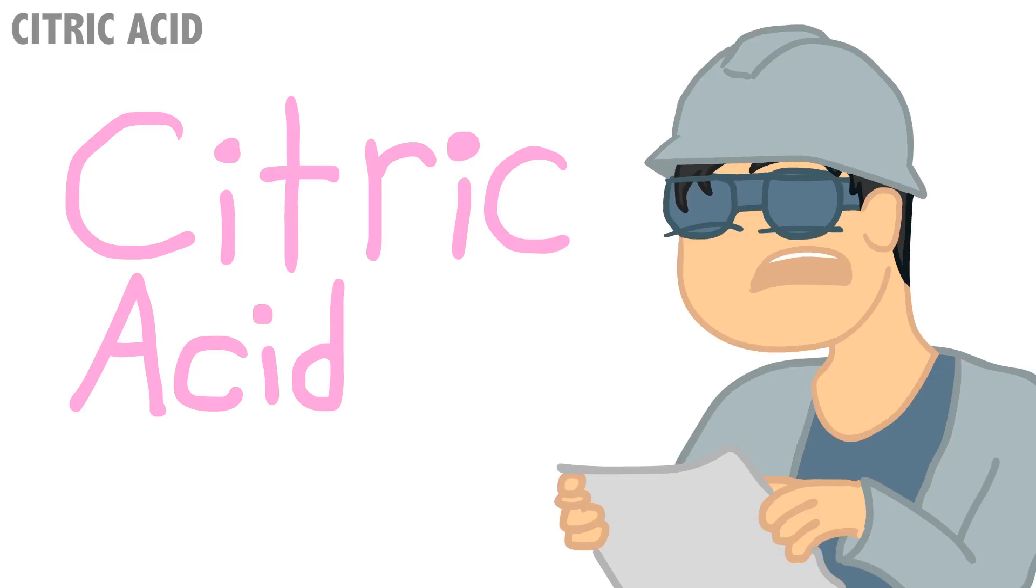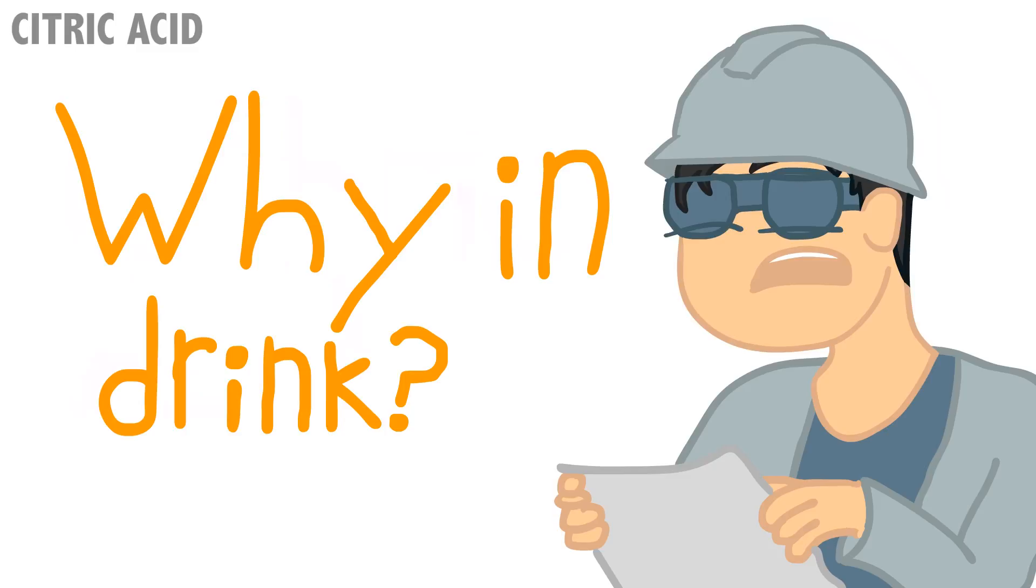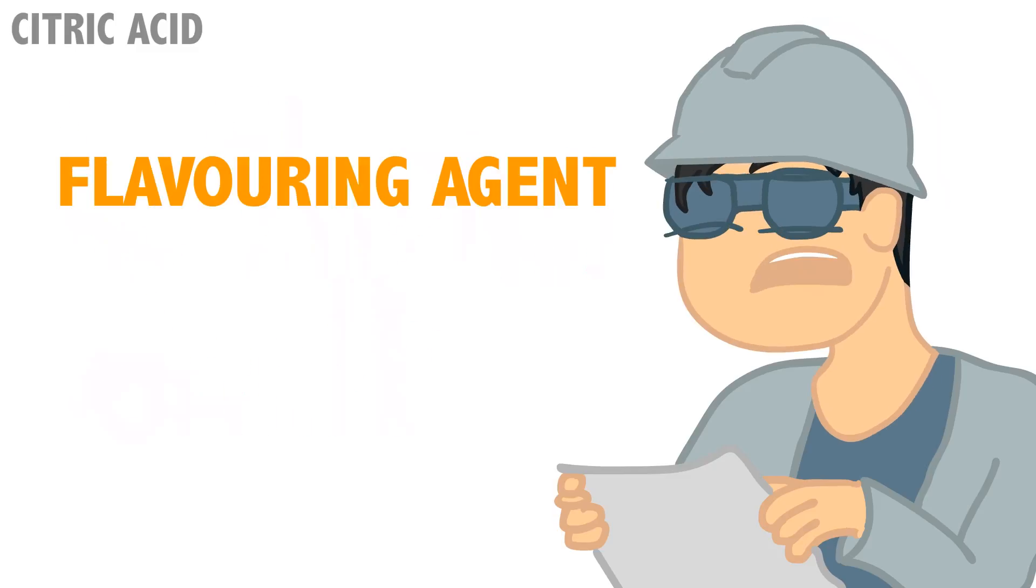Okay, so citric acid. Why is citric acid inside of Sprite? It's used as a flavoring agent and as a preservative. That's it.